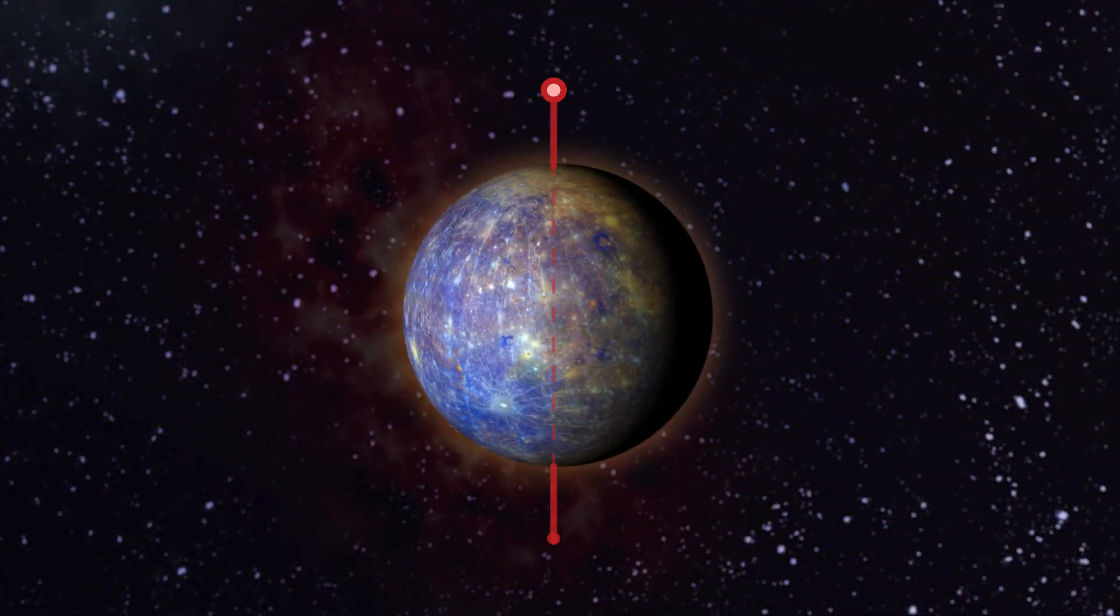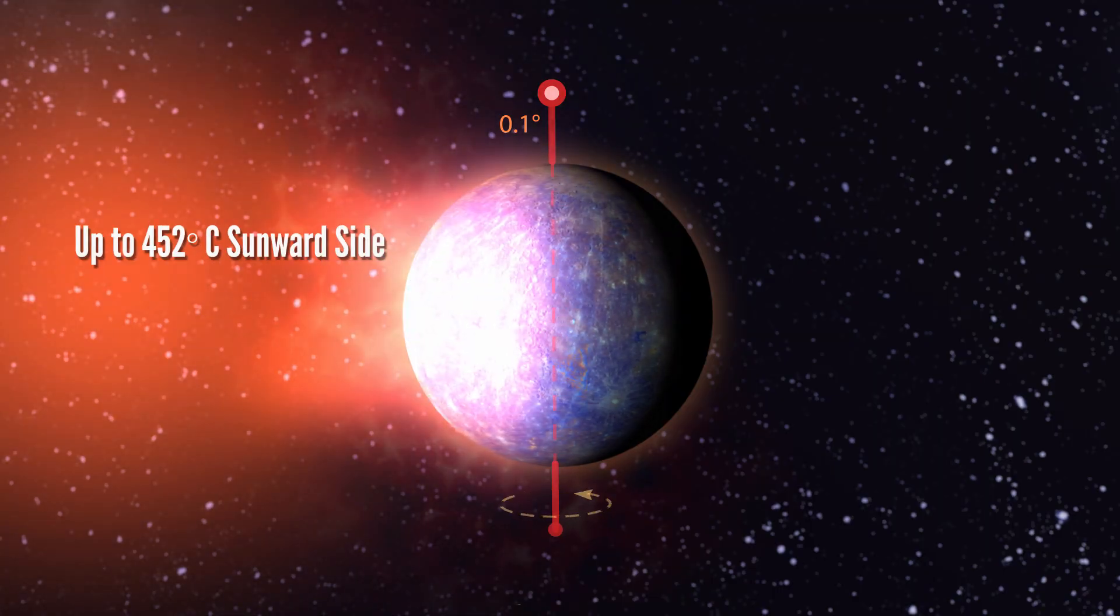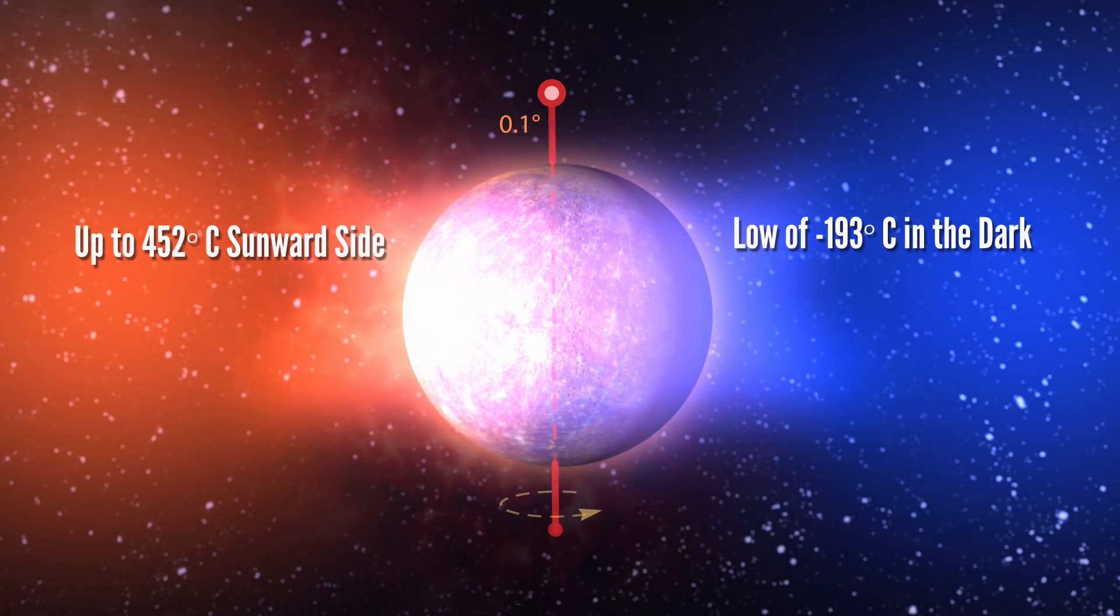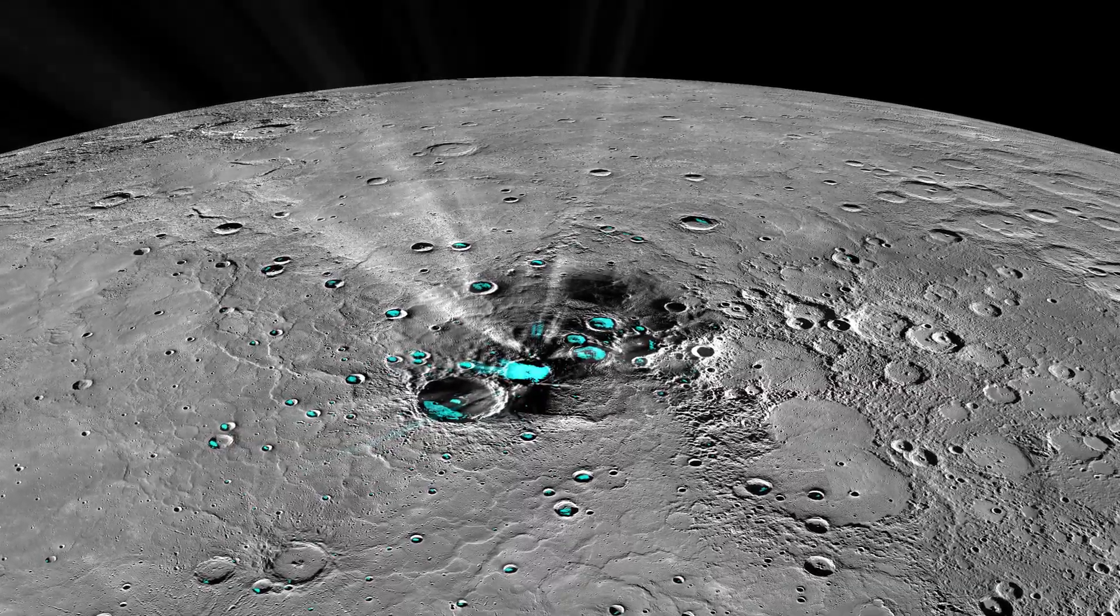Mercury doesn't have much of an axial tilt or much of an atmosphere, so no seasons for you either. Instead, Mercury's got more of an inhospitable death scape thing going on, burning on the side facing the sun and freezing on the other. Although if you find yourself in the shadow of certain craters, you can still find ice there.